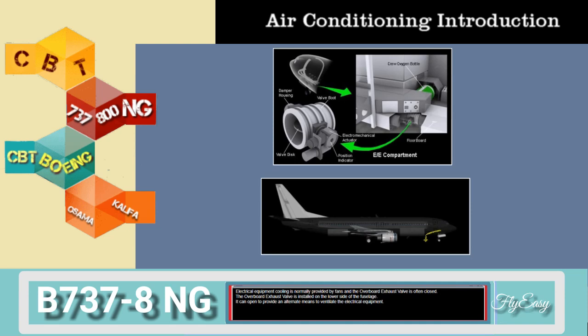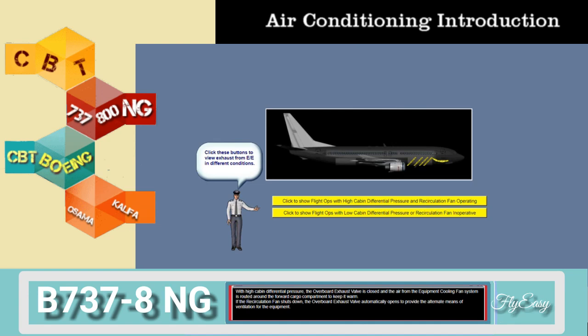Electrical equipment cooling is normally provided by fans, and the overboard exhaust valve is often closed. The overboard exhaust valve is installed on the lower side of the fuselage and can open to provide an alternate means to ventilate the electrical equipment. With high cabin differential pressure, the overboard exhaust valve is closed and the air from the equipment cooling fan system is routed around the forward cargo compartment to keep it warm. If the recirculation fan shuts down, the overboard exhaust valve automatically opens to provide the alternate means of ventilation for the equipment.